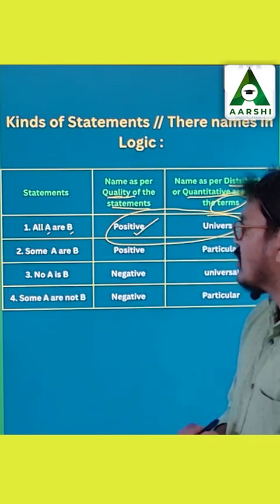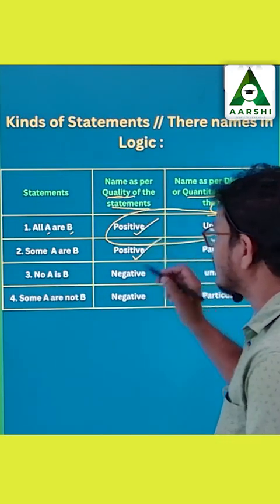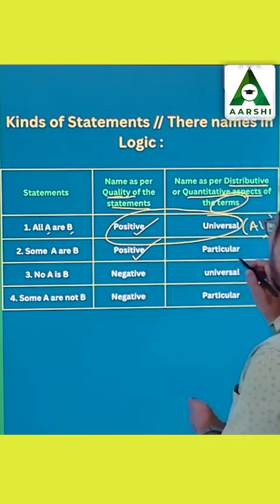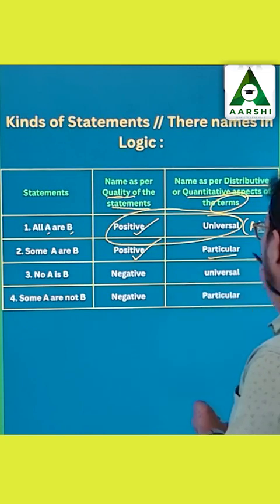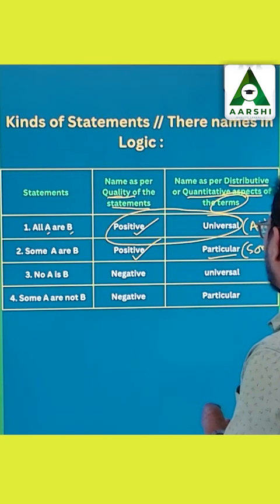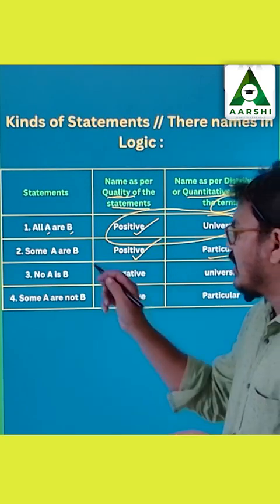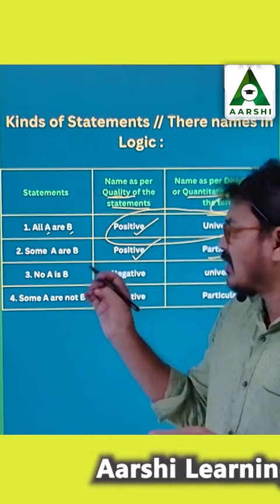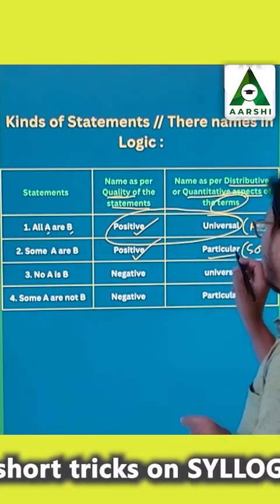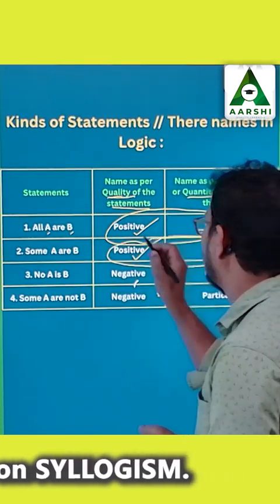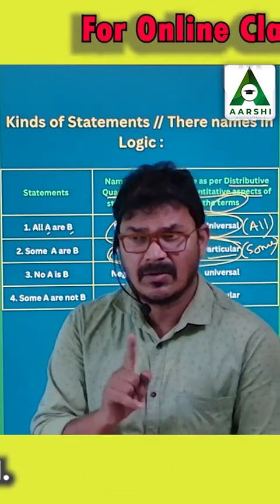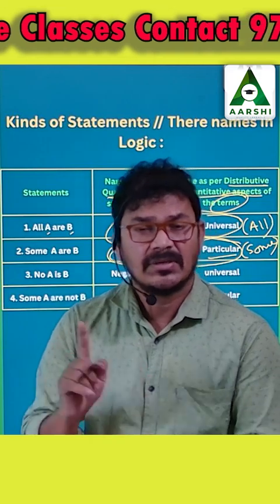Another variation is the I-type statement: some A is B. Again, it is a positive statement. The quantitative relation of A with B is particular, because 'particular' means 'some' — some A is B. So the subject scope is particular. In total, it is a positive particular statement. To summarize: 'All A is B' is positive universal; 'Some A is B' is positive particular.